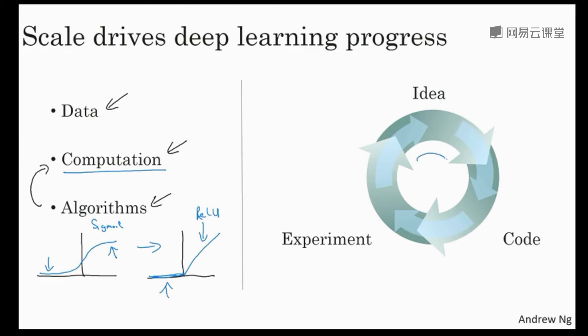And when your neural network takes a long time to train, it just takes a long time to go around this cycle. And there's a huge difference in your productivity building effective neural networks when you can have an idea and try it and see if it worked in 10 minutes or maybe at most a day versus if you have to train your neural network for a month, which sometimes does happen. Because when you get a result back in 10 minutes or maybe in a day, you could just try a lot more ideas and be much more likely to discover a neural network that works well for your application.